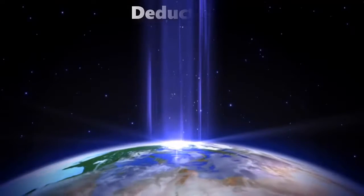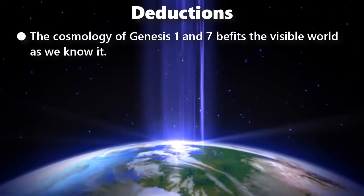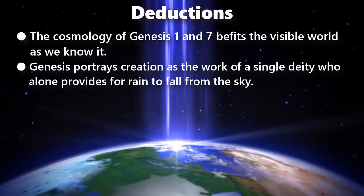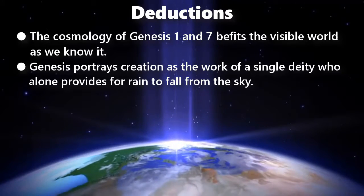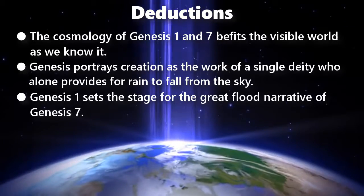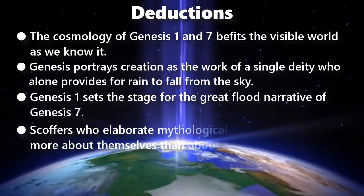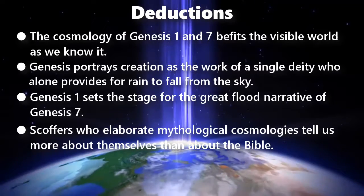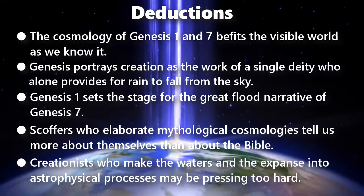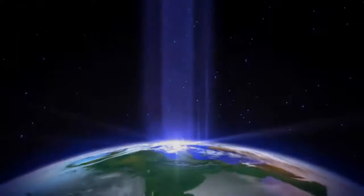From these verses we can make five deductions: The cosmology of Genesis 1 and 7 befits the visible world as we know it. Genesis portrays the creation as the work of a single deity who alone provides for rain to fall from the sky. Genesis chapter 1 sets the stage for the great flood narrative of Genesis chapter 7. Scoffers who elaborate mythological cosmologies tell us more about themselves than about the Bible. Creationists who make the waters and the expanse into astrophysical processes may be pressing too hard.